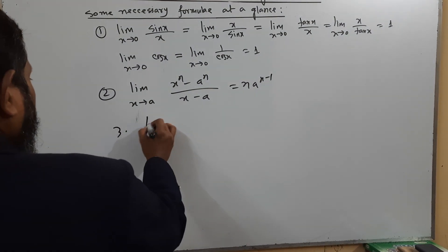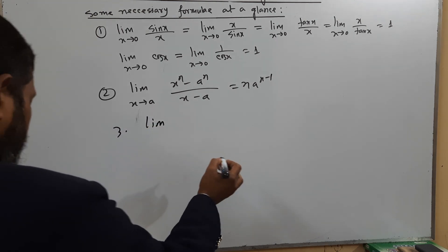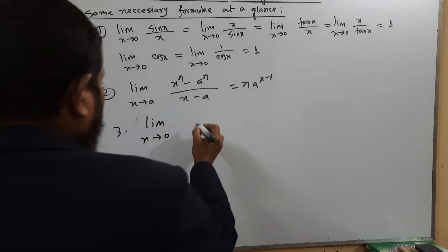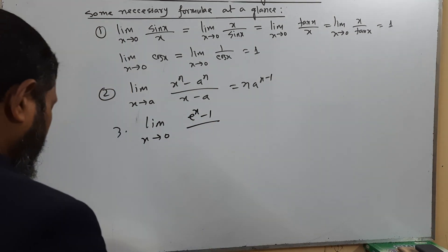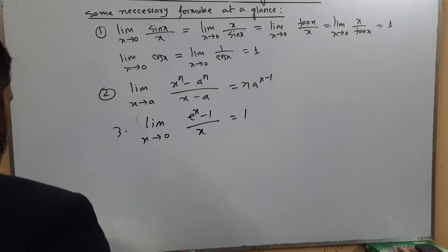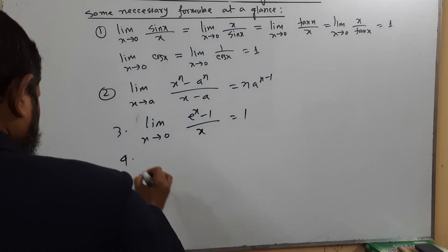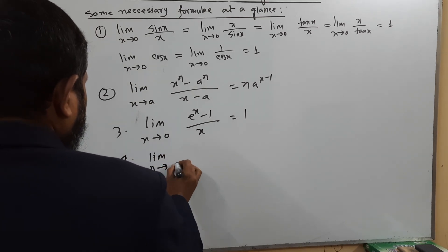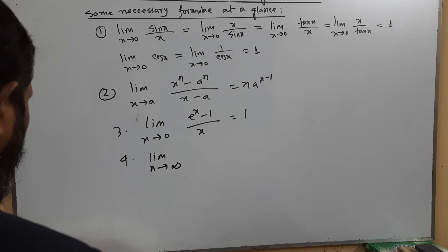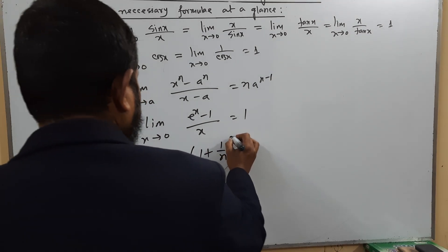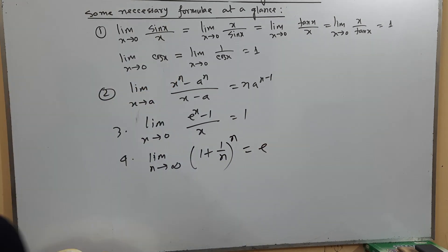Third formula: limit x tends to 0 of (e^x − 1) / x equals 1. Fourth formula: limit n tends to infinity of (1 + 1/n)^n equals e. This is a very important formula.